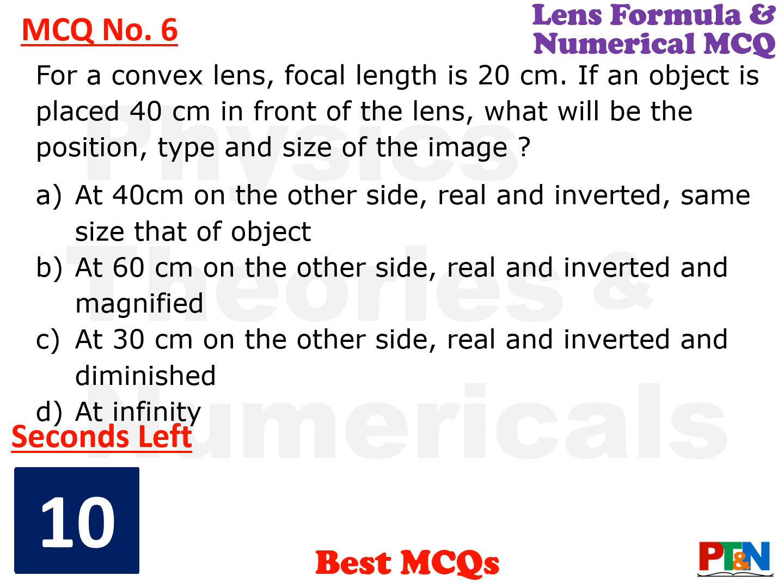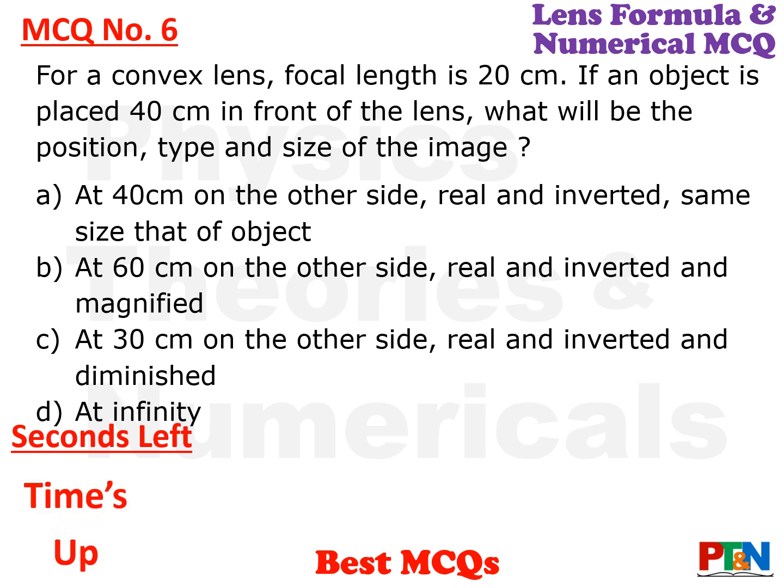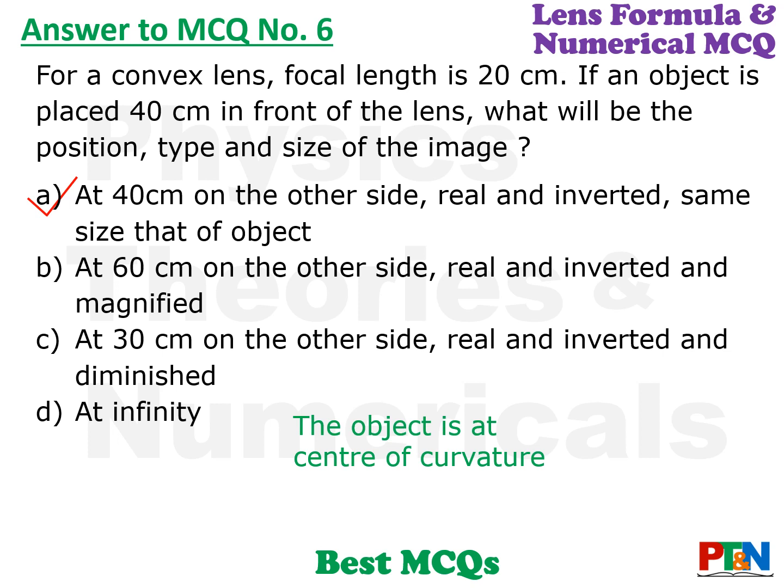MCQ 6: For a convex lens of focal length 20 cm, if an object is placed 40 cm in front of the lens, where will the image be? The answer is option A: the image will be at 40 cm on the other side of the lens, real and inverted, and of the same size. Since the focus is at 20 cm and the object is at 40 cm, the object is at the center of curvature, so the image is also formed at the center of curvature on the other side — real, inverted, and same size.